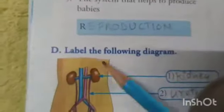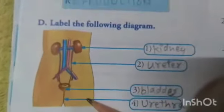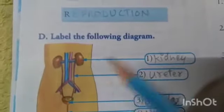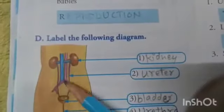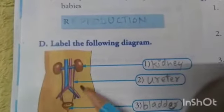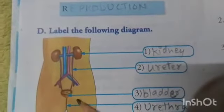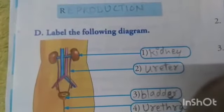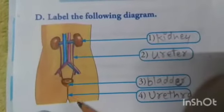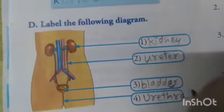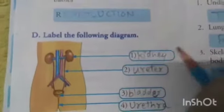Question D is label the following diagram of the excretory system. These are kidneys (K-I-D-N-E-Y). These two tubes are ureter (U-R-E-T-E-R). This one is bladder (B-L-A-D-D-E-R) — or you can write urinary bladder. The last one is urethra (U-R-E-T-H-R-A). Label it like this.